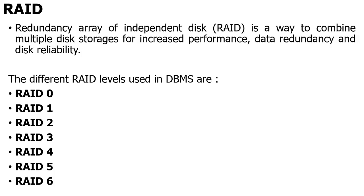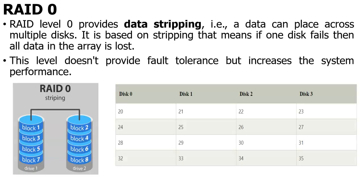So different RAID levels used in databases are RAID 0, RAID 1, RAID 2, RAID 3, RAID 4, RAID 5 and RAID 6. We will discuss one by one. RAID level 0 is called data striping — I have some amount of data and that will be shared to all the disks which are available. So this is RAID 0, which is called data striping.